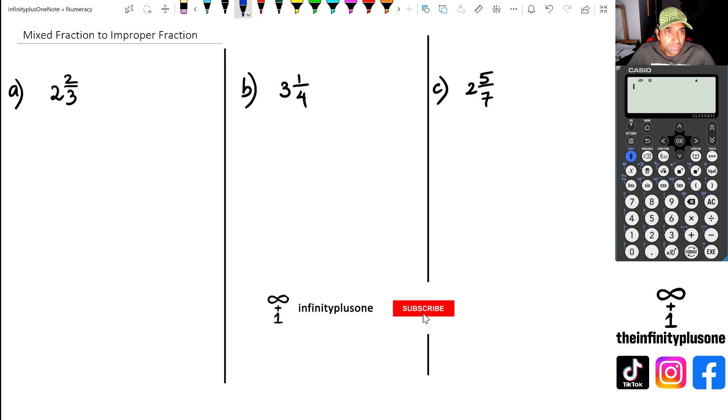To actually convert from mixed fraction to improper fraction, all we're really doing is taking, in this case, the three and multiplying it with the two. So we're basically looking at these two numbers, the yellow ones, that we're going to multiply with each other.